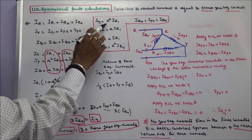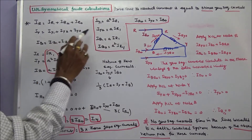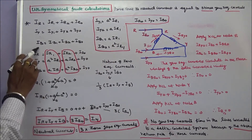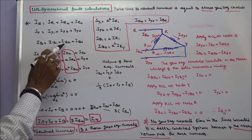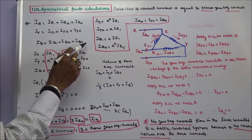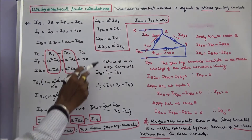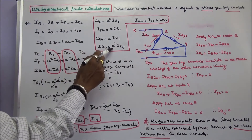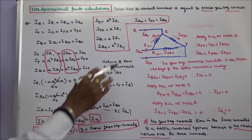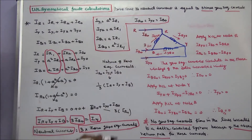IY1 is equal to A-squared IR1. IY2 is equal to A times IR2. IB is equal to IB1 plus IB2 plus IB0. IB1 is equal to A times IR1. IB2 is equal to A-squared times IR2. IR0 is equal to IY0 is equal to IB0.